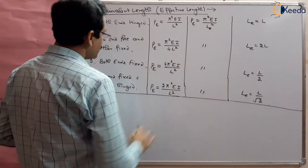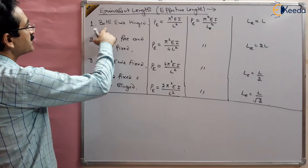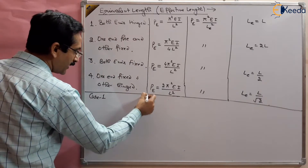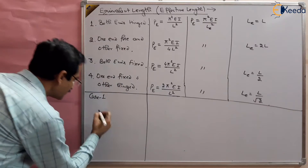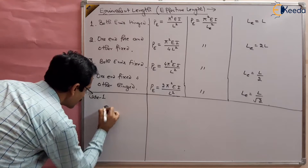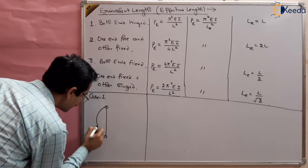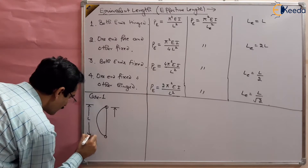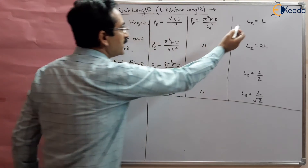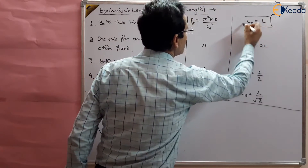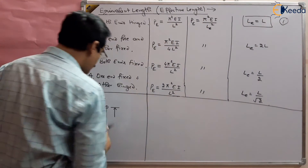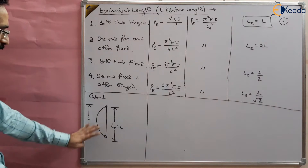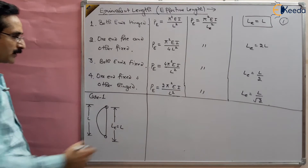We can also show the end conditions graphically. Case 1: both ends hinged. The column is hinged at both ends and deflects in a smooth curve over its actual length L. The effective length Le equals L, so the actual length and effective length are the same for this case.